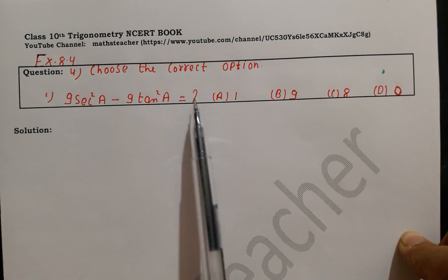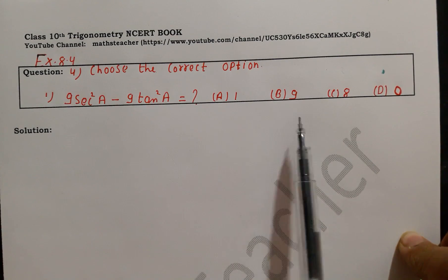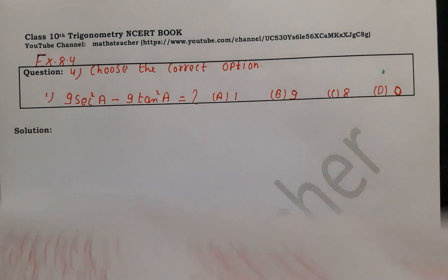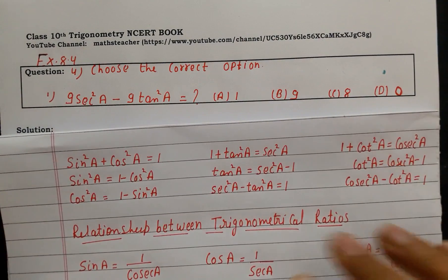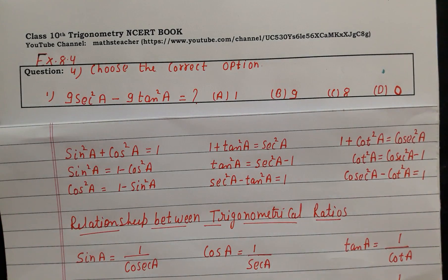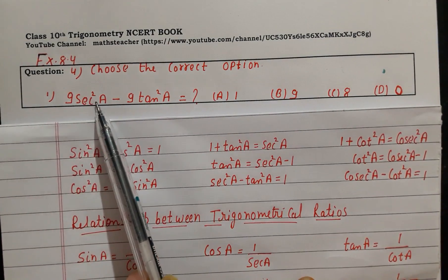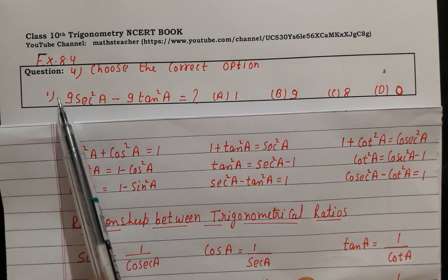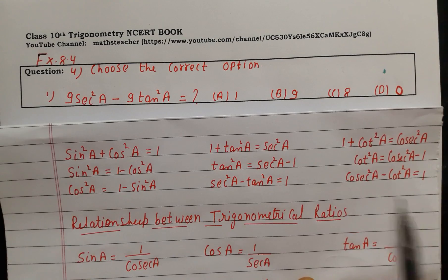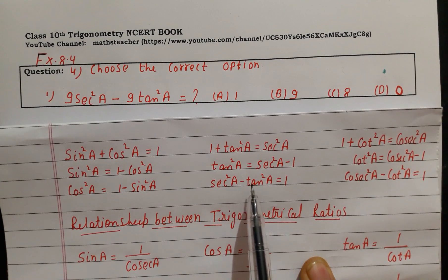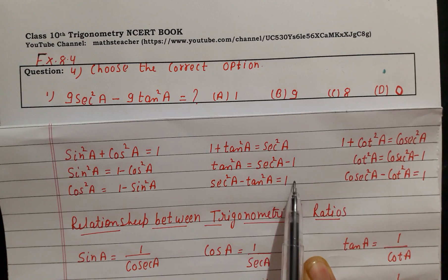To solve this question we will use trigonometric ratios and identities. The identity we will use here involves sec² and tan². Since 9 is a common multiple, we take 9 as common, leaving sec²A minus tan²A, and we will apply this identity.